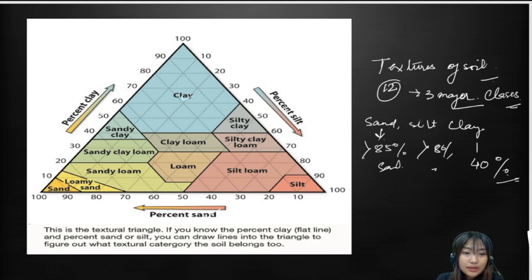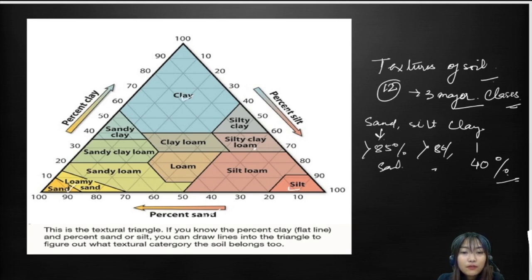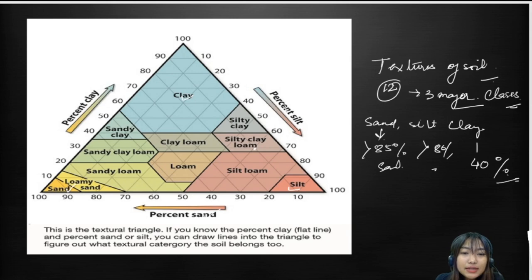To read the textural triangle, for example a silty clay loam soil would have about 60 percent silt, 25 percent sand, and 30 percent clay. That's how we read the textural triangle. I'd like you all to comment which of these textural classes is most favorable for crop production or for cultivation of vegetables or any crops — please comment in the comment section.